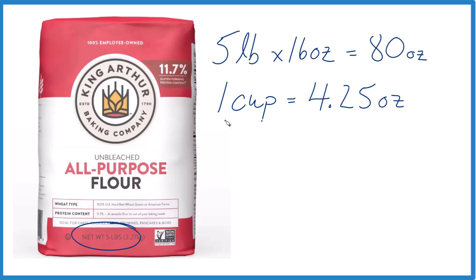So one cup is about 4.25 ounces. Our five pounds is 80 ounces, and we're just going to take that and divide it by 4.25 ounces per cup, and that'll tell us how many cups we have in our five pound bag.